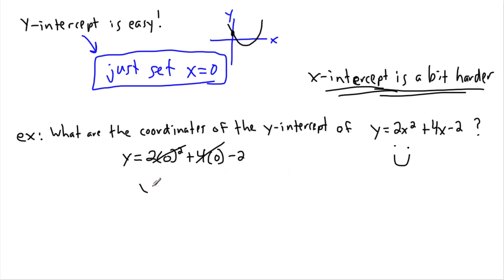If I want the coordinates, x was equal to zero, y was negative 2. But if I want the coordinates, I should write it in proper notation: zero comma negative 2. These are the coordinates of the y-intercept.